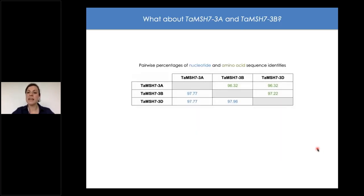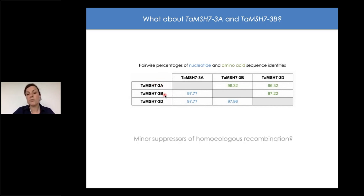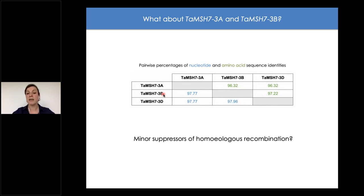Regarding MSH7-3A and MSH7-3B, the two other homeologous copies share more than 97% identity at the nucleotide level and more than 96% at the amino acid level — they are very highly conserved. Because of potential functional redundancy and their location on chromosomes 3A and 3B, it is reasonable to assume they could be the minor suppressors of homeologous recombination already described on those chromosomes, though this is speculative and needs experimental verification.